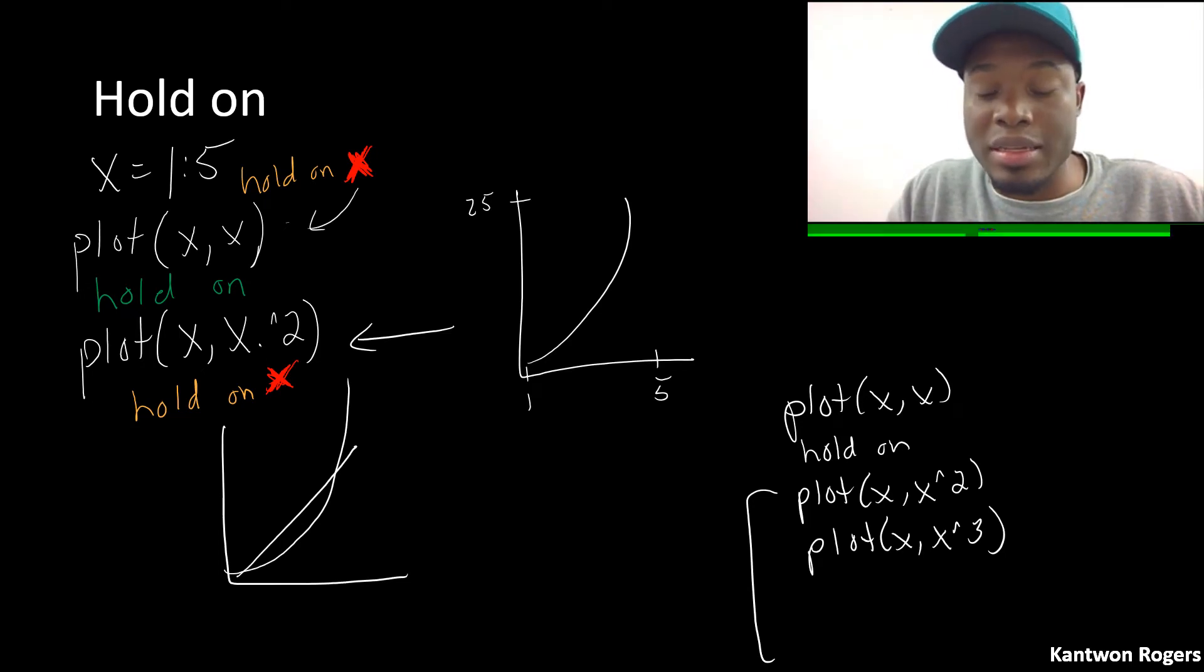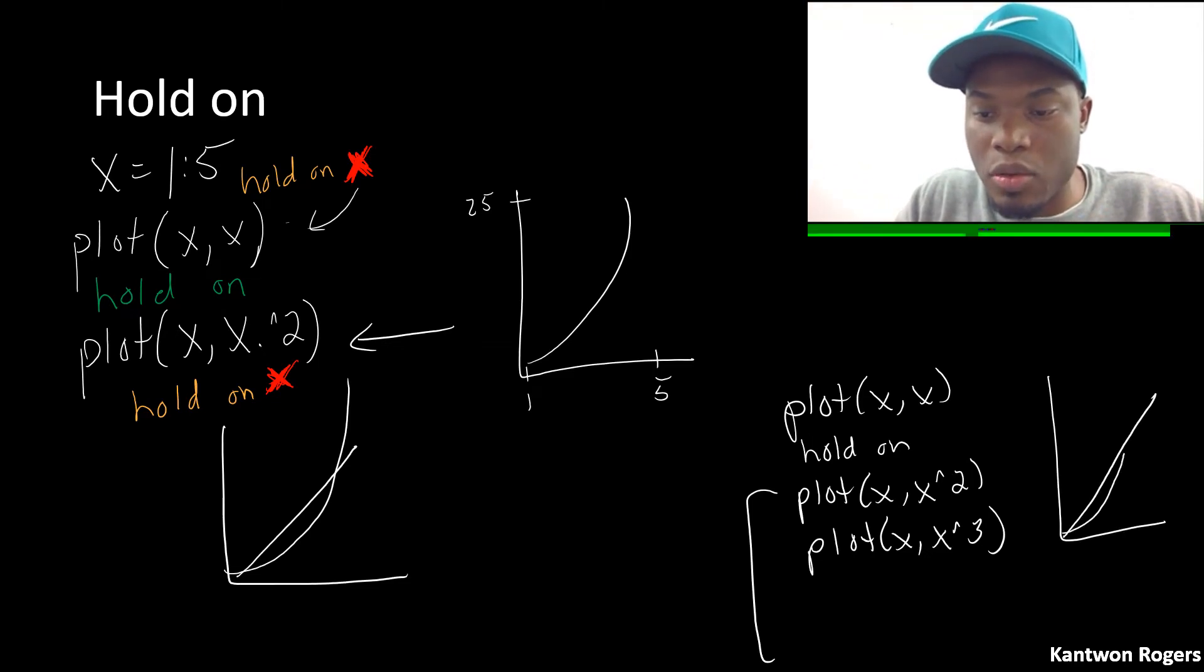In order for this functionality to stop I would then have to call hold off. So if I were to call hold off, in this case here I would have a plot that would have x and have x squared and also have x cubed.